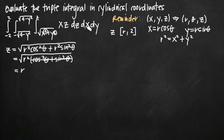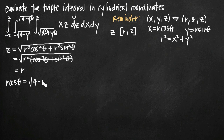Our next variable is x — the dx means the middle integral's limits relate to x. We have x equals the square root of 4 minus y squared. Substituting our conversion formula, r cosine theta equals square root of 4 minus, and plugging in r sine theta for y then squaring gives us r squared sine squared theta. We want to simplify this equation and solve for r to find our upper limit of integration for r.